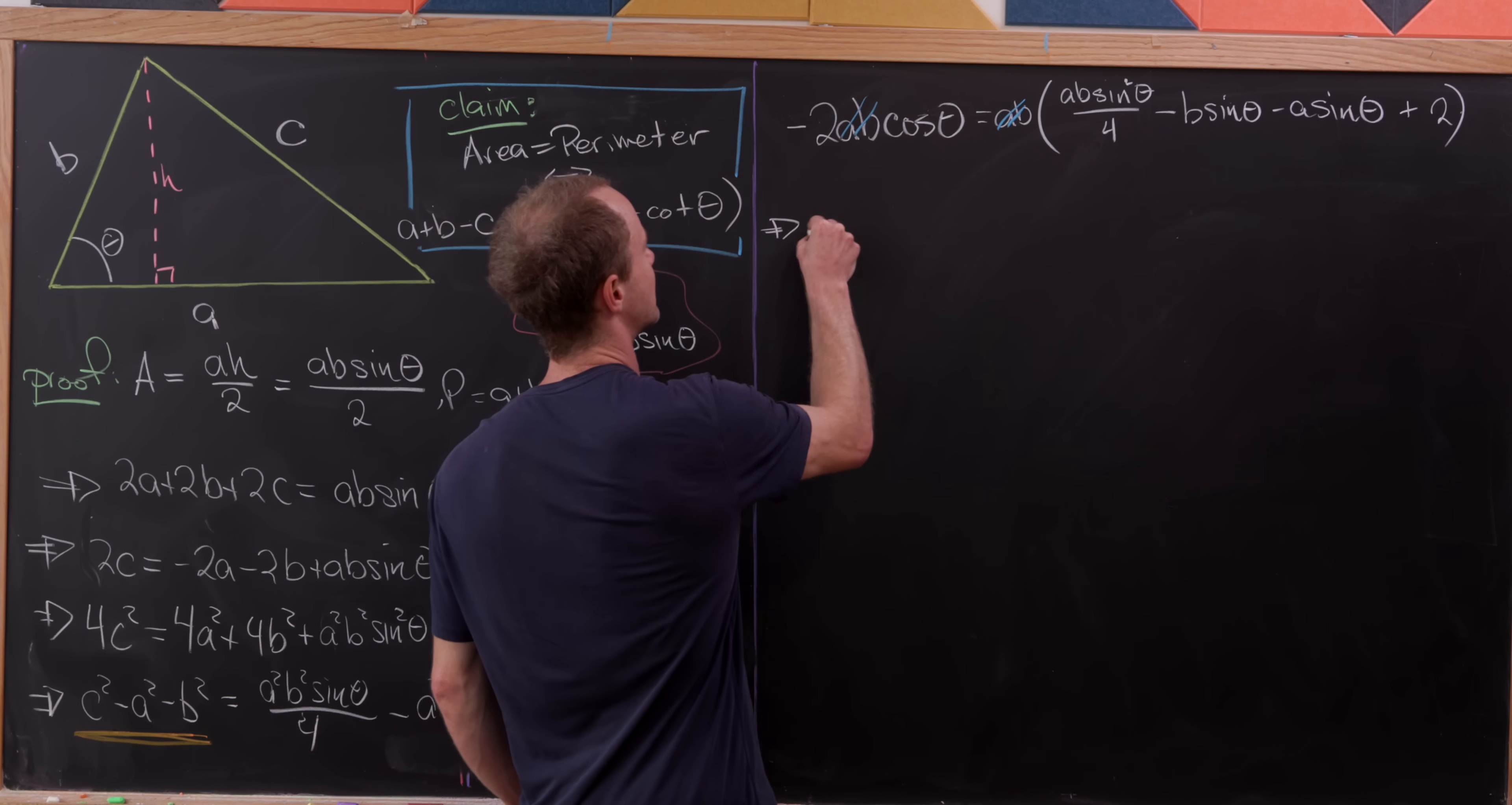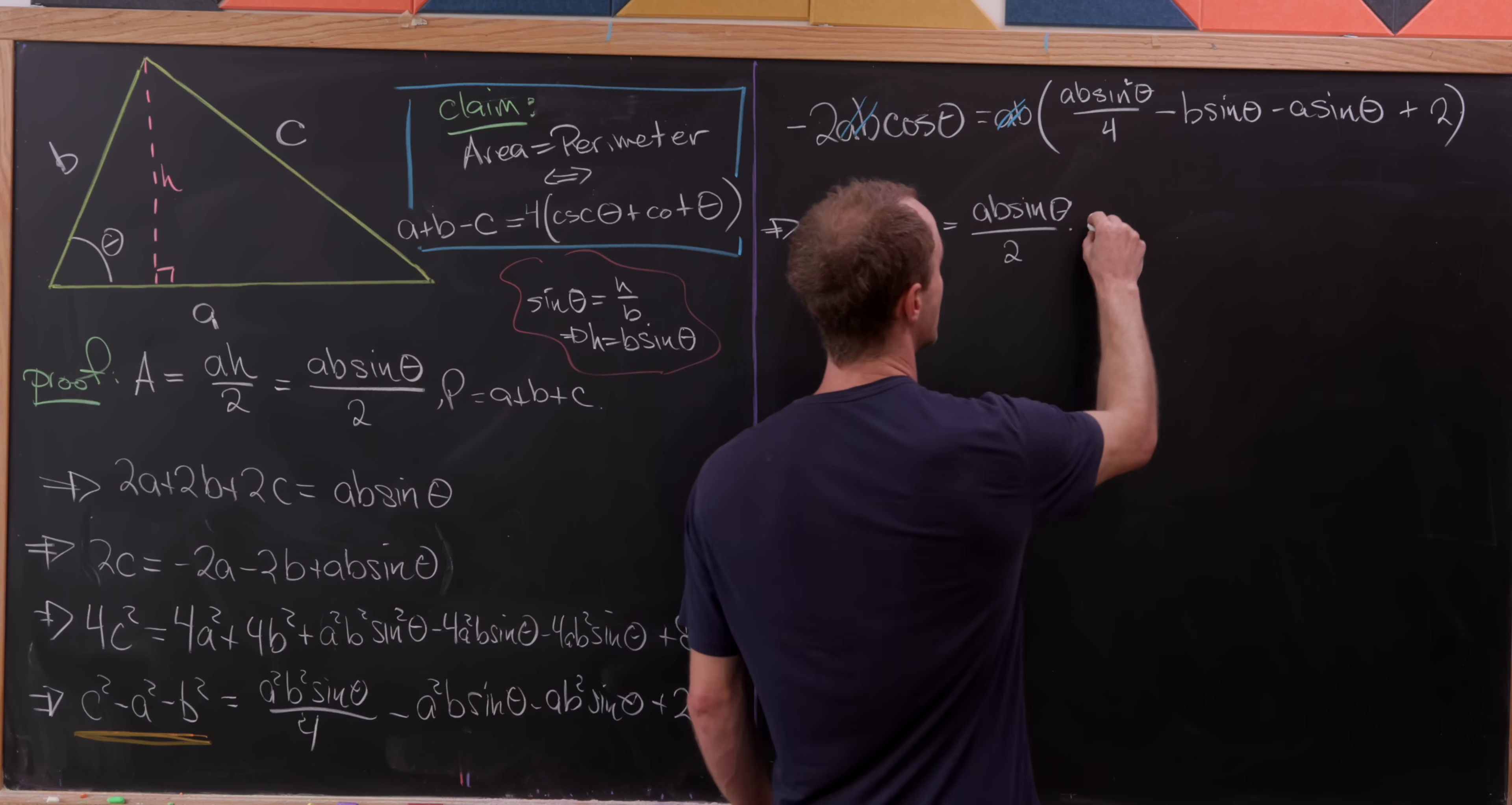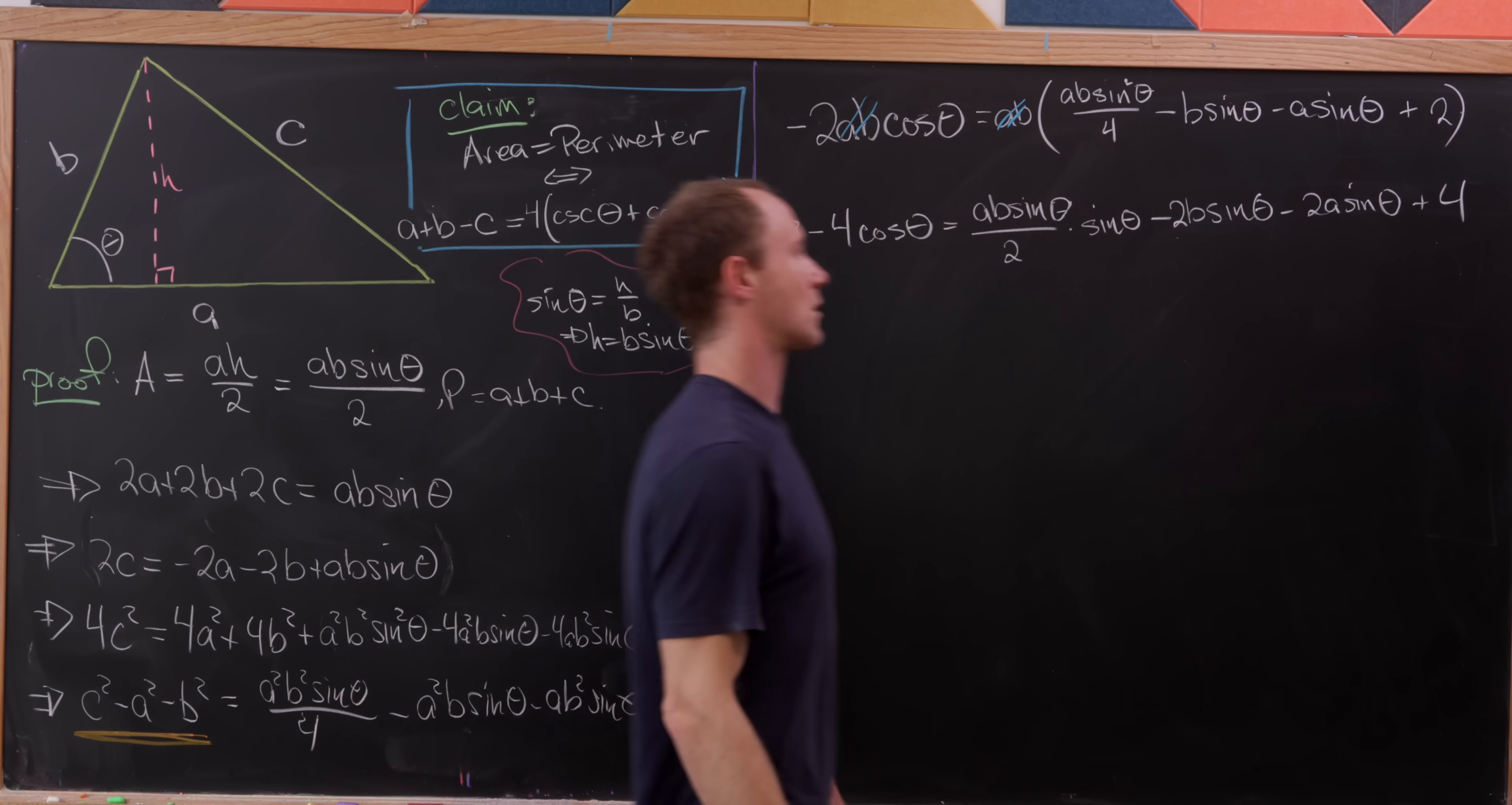And that's going to give me minus 4 times cosine theta equals a times b times sine theta over 2 times another sine theta. So I took that sine squared and I wrote it as sine times sine, and then minus b sine theta times 2, and then minus 2 times a times sine theta. And then we'll have a plus 4 here.